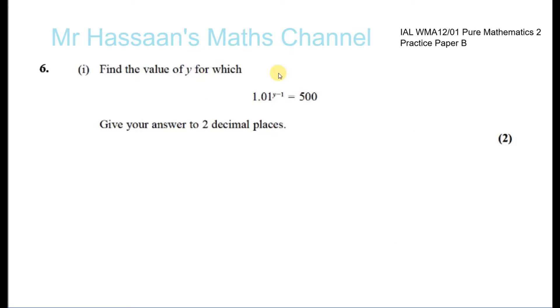Okay, question number 6 from practice paper B, Pure Mathematics 2, part 1. Find the value of y for which 1.01 to the power of y minus 1 equals 500, giving your answers to 2 decimal places.